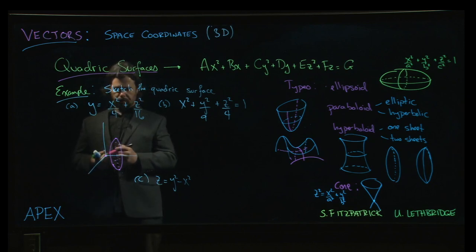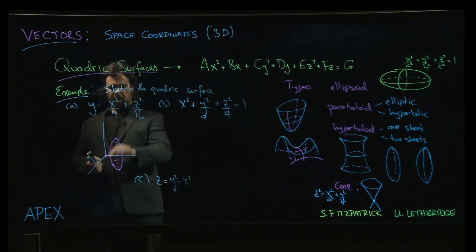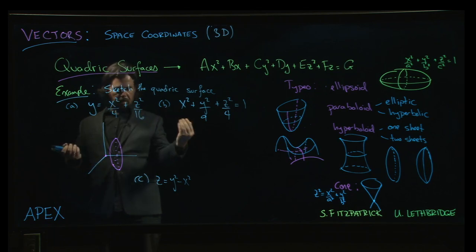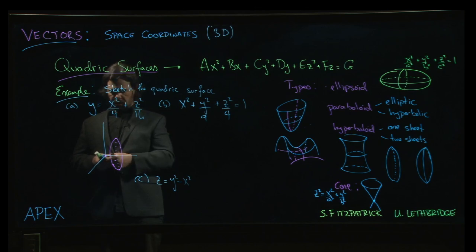Whereas if you were to, let's say, set x equal to zero, if I put x equal to zero and look at what do I have in the yz plane? Well, I would have y equals z squared over 16. That's a parabola. It's a fairly wide parabola because of the 16 on the bottom, the scale factor.